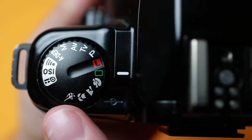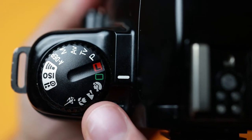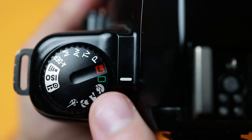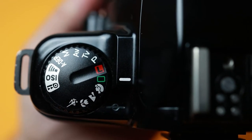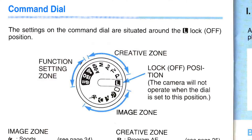The EOS 500 has several settings for photographers looking to avoid the technical side of taking photos. These settings can be found at the bottom of the selection dial. The manual refers to them as the image zones, but they are really just auto exposure settings.